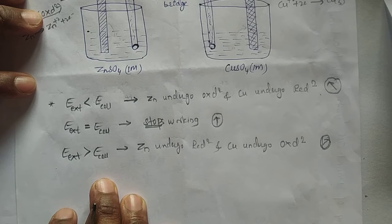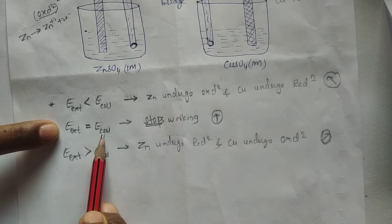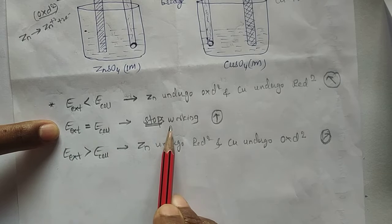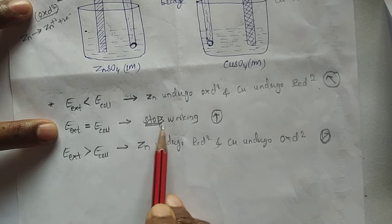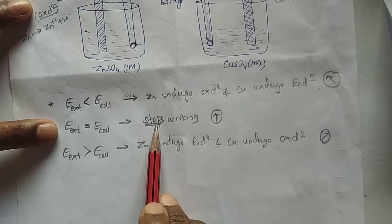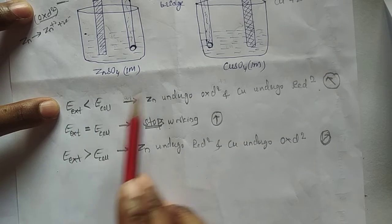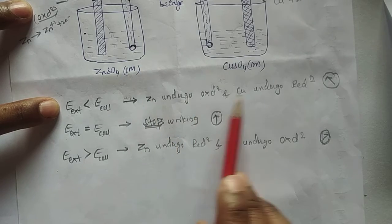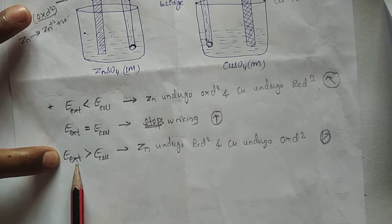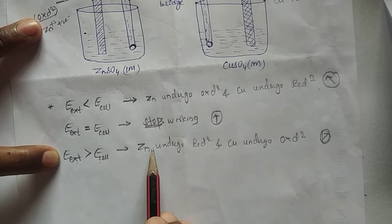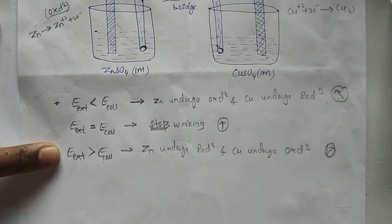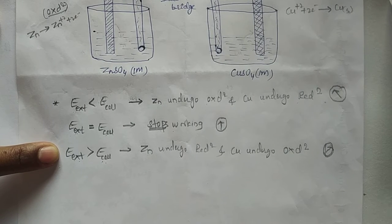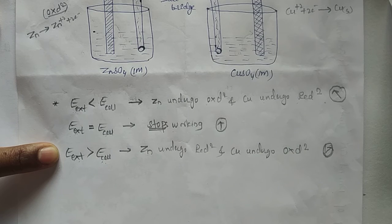In summary: the working of the Daniel cell when external opposite potential is applied — if the external opposing potential equals the cell potential, the Daniel cell stops working and gives no current. If the external potential is less than the cell potential, it works as normal with zinc undergoing oxidation and copper undergoing reduction. If the external potential is greater than the cell potential, the cell reaction reverses: zinc undergoes reduction and copper undergoes oxidation. Hope you understood this concept.